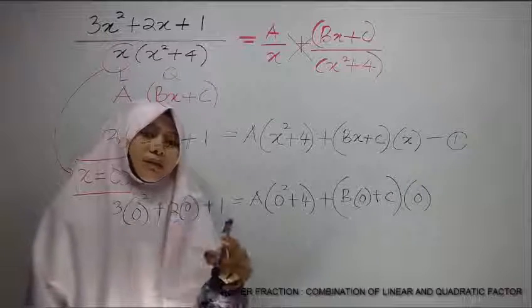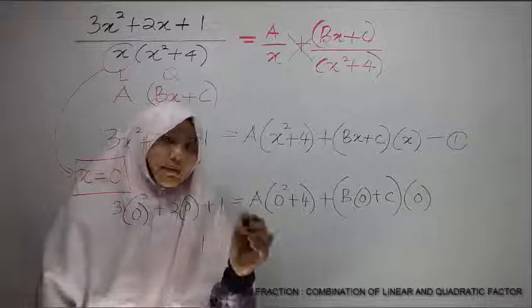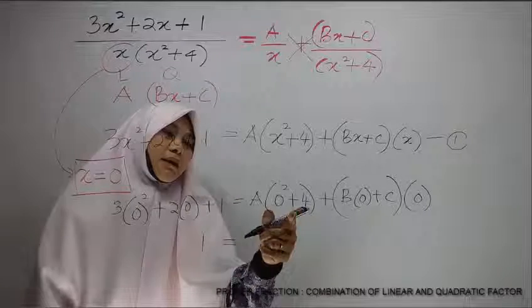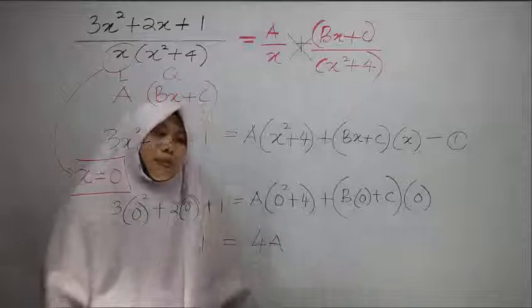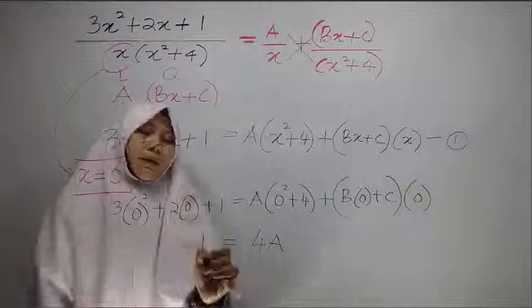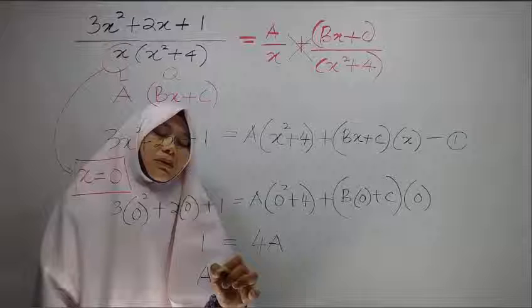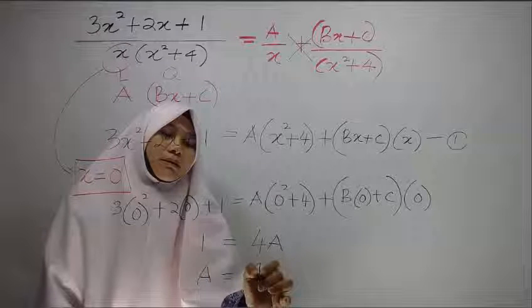Now, this term here will be 1, and here we will have 4A, now this whole term will become 0. Now, A will be 1 over 4.